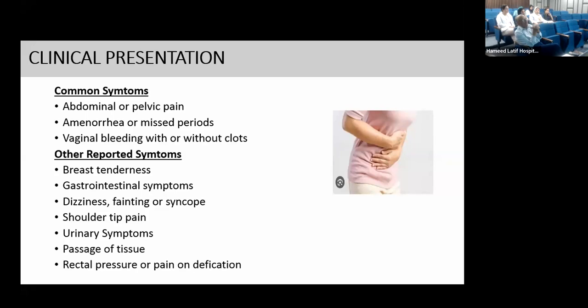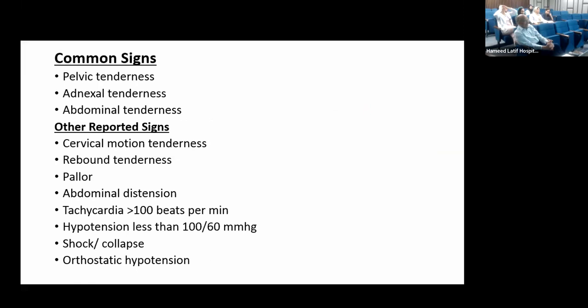Common signs include pelvic tenderness — which may be present unilaterally, bilaterally, or as generalized abdominal tenderness — and adnexal tenderness. Other reported signs include cervical motion tenderness, rebound tenderness, pallor, abdominal distension, tachycardia and hypotension present in hypovolemic shock, and orthostatic hypotension.